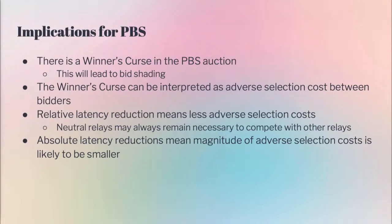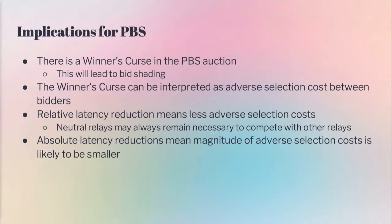The implications for PBS are quite interesting. There will be quite some bid shading and more strategic bidding to be done. Lots of builders have committed to no strategic bidding, but this might be necessary to some extent. The winner's curse can be interpreted as adverse selection costs between bidders. This is different from the classic auction model — in this case, some information is strictly better than others, and winning means other people would have bid less than you, meaning there are actual adverse selection costs. Relative latency reductions mean less adverse selection costs. If you bid at T7 and someone bids at T11, there could have been a giant price decrease. But if the delta is very small, this decrease is likely to be less. This could be an argument why neutral relays may always remain necessary, even with an ePBS approach, so everyone has access to similar latency reductions.